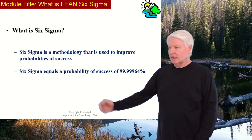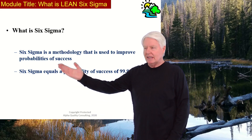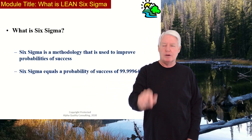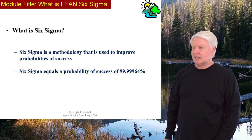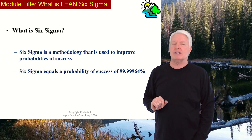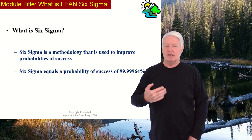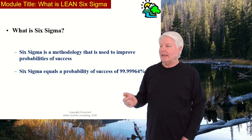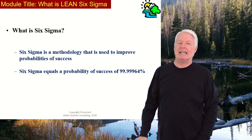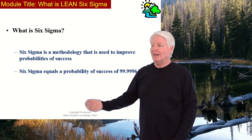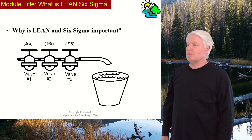What is Six Sigma? Six Sigma is a methodology used to improve probability of success. Six Sigma equals a probability of success of 99.9964%. Imagine teaching your kid to hit a baseball until 99.99964% of the time they hit a home run — that's what Six Sigma is all about. It's pretty amazing.